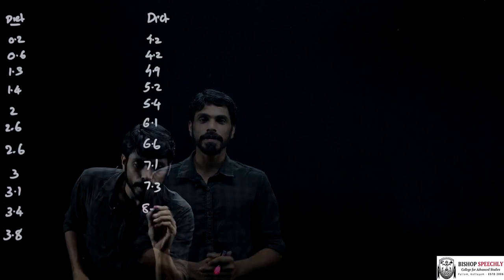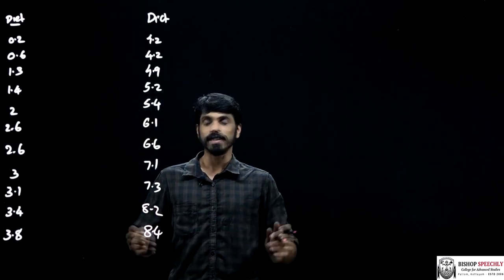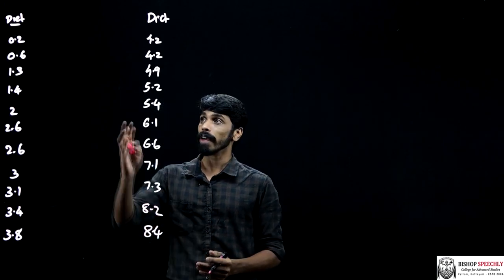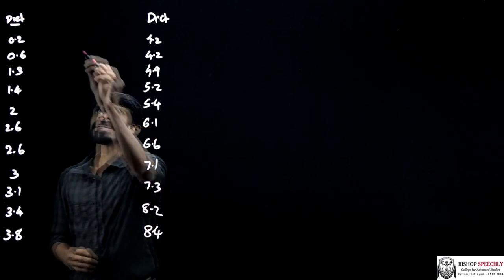In this case, three observations were given: diet 1, diet 2, and diet 3. First of all, we have to put all the observations in ascending order, that is from lowest to highest. So I'm going to write it here, 0.2 to 8.4. What I am going to do is put the ranks on the basis of this.